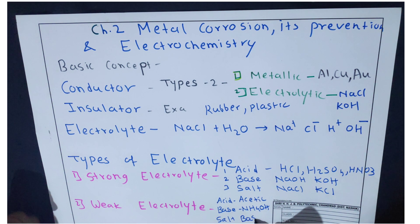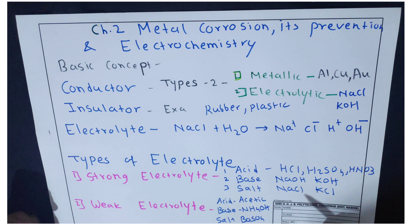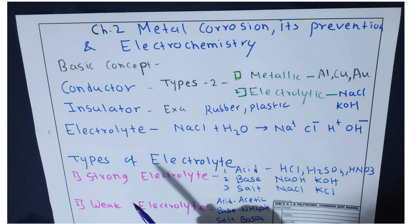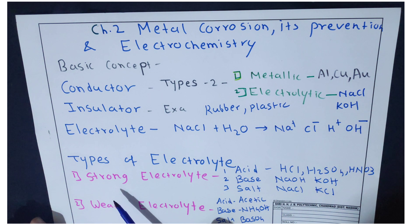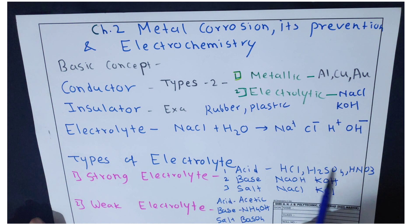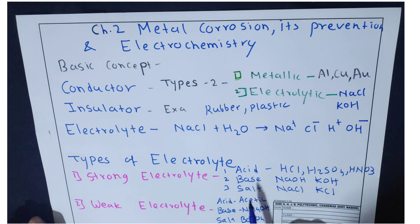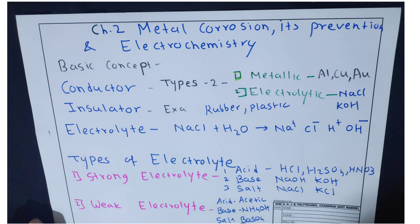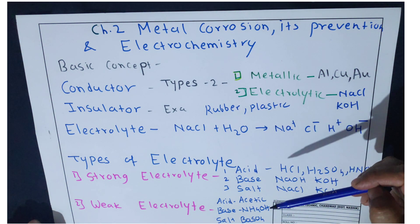Examples of weak electrolytes also include BaSO₄ and aluminium hydroxide. To summarize, electrolytes are classified into two types: strong and weak. Strong electrolytes include strong acids (HCl, H₂SO₄, HNO₃), strong bases (NaOH, KOH), and strong salts (NaCl, KCl). Weak electrolytes include weak acids like acetic acid and oxalic acid, and weak bases and weak salts.